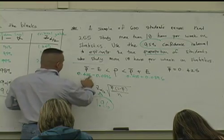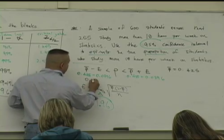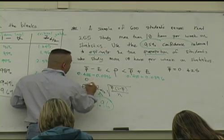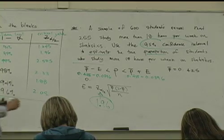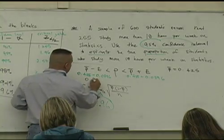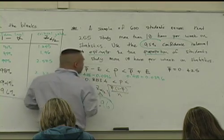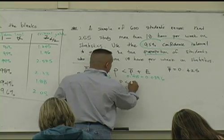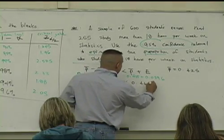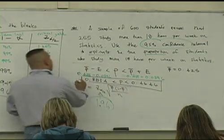So what do you get? Be careful. 0.3854 less than P, less than, what's 0.425 plus 0.0396? 0.4646. And here's the story. We can say this with 95% confidence.